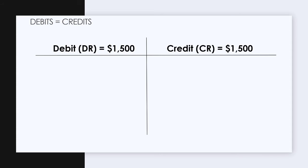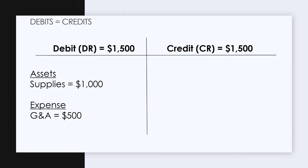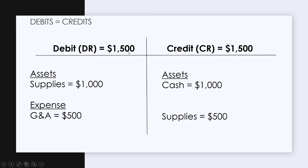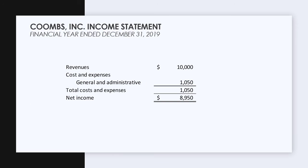First, let's make sure our debits equal our credits. Our supplies are $1,000 and our G&A expense is $500. Expenses have a debit normal balance and assets have a debit normal balance, so we have $1,500 in debits. We decreased our cash by $1,000 credit when we spent it for supplies, and we decreased our supplies by $500 during our accrual. So our debits equal our credits — we're okay on the T-account front.